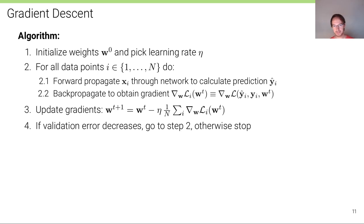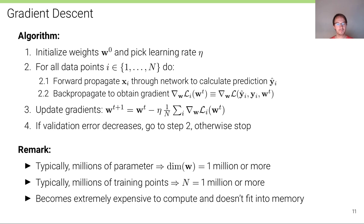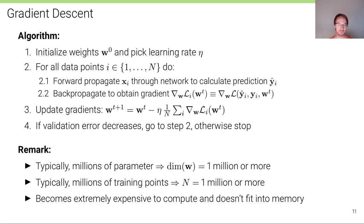If the validation error decreases, we go to step two and repeat; otherwise we stop. However, in deep learning we typically deal with millions of parameters and a very large number of training points, which makes this update very expensive.